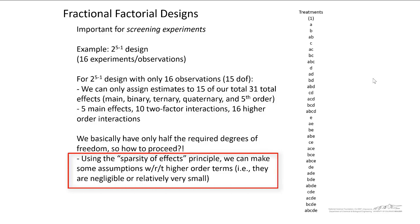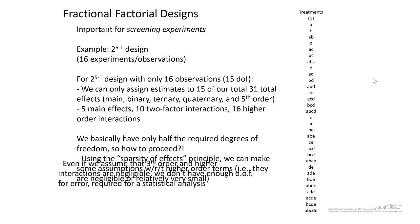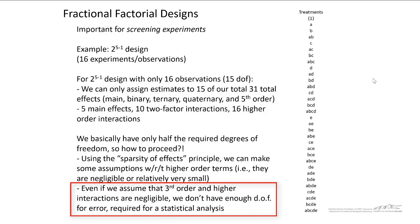Using the sparsity of effects principle, we can make some assumptions with respect to higher-order terms. We can assume that the 3rd, 4th, and 5th order terms are negligible. But still, even if we do that, if we neglect all the 3rd order and higher interactions, we still don't have enough degrees of freedom for error because we have 15 main effects and two-factor interactions, and we only have 15 degrees of freedom. And so when we're statistically analyzing these fractional factorial designs, it becomes a little more complicated.